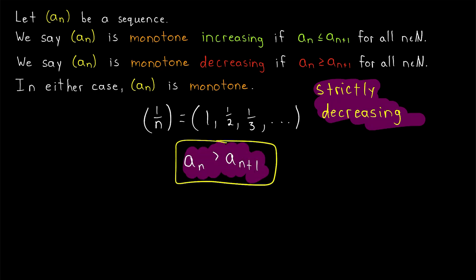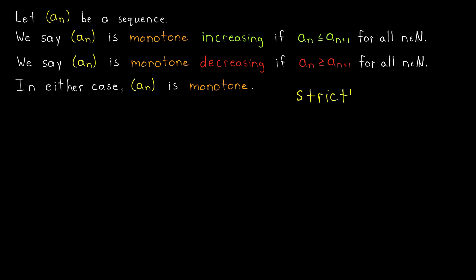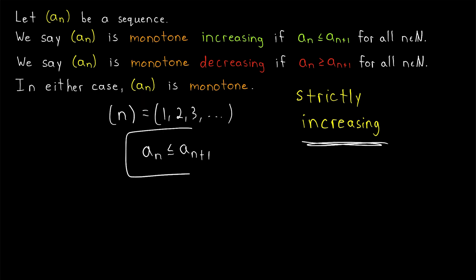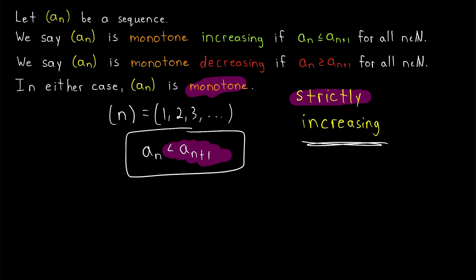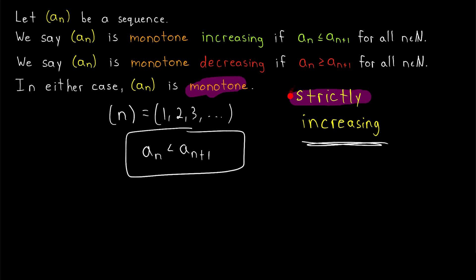Every term is greater than the next one. The terms of a decreasing sequence are allowed to stay the same or go down in value, but for a strictly decreasing sequence, each term has to be strictly going down. Similarly, for a strictly increasing sequence, every term is less than the next one — not just less than or equal to. Sometimes these are also called strictly monotone. Usually these more general definitions work for us, but you will occasionally encounter the strict variants as well.